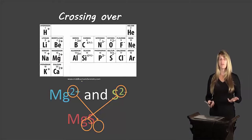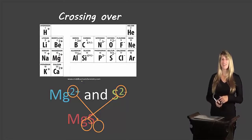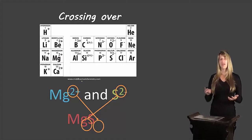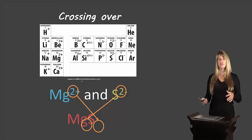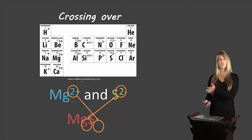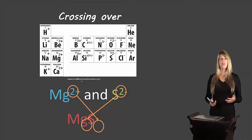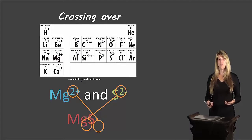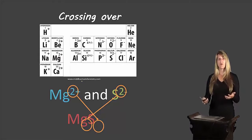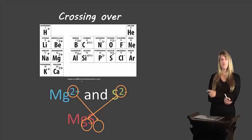For example, if magnesium hypothetically had a 4+ charge, both 4 and 2 are divisible by 2. We'd divide 4 by 2 to get 2 and 2 by 2 to get 1, then cross over to get MgS₂. So we always look for the greatest common factor and divide both charges by it before crossing over. Always check if the two charges share a common factor — that's when you need to do that extra step.